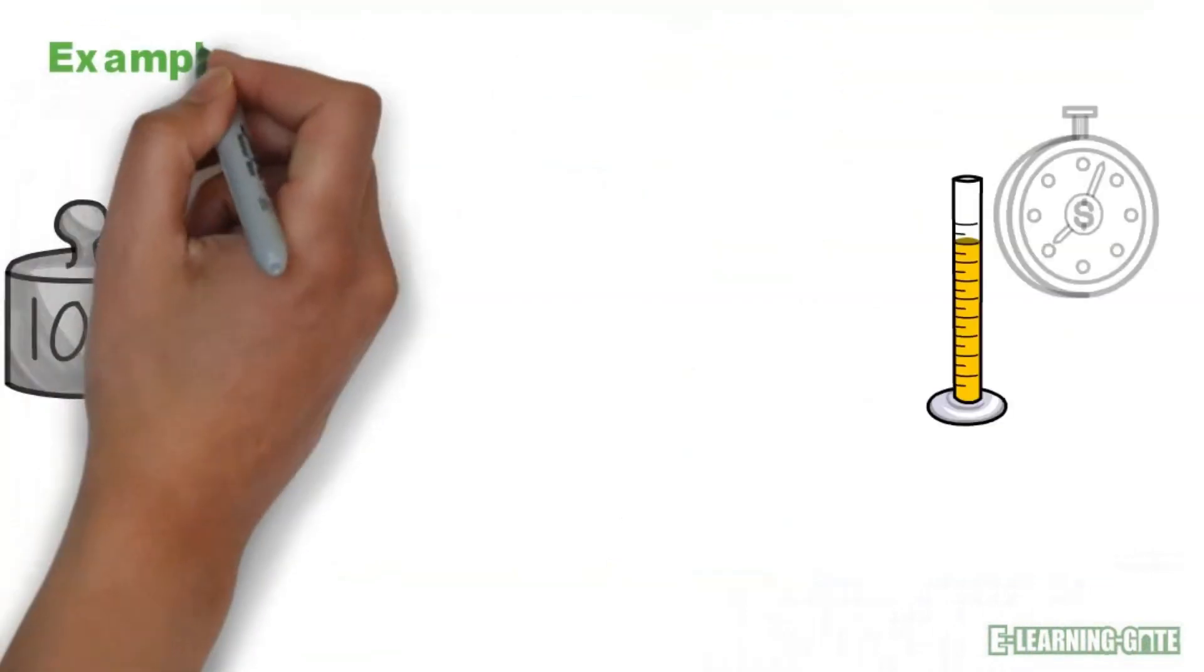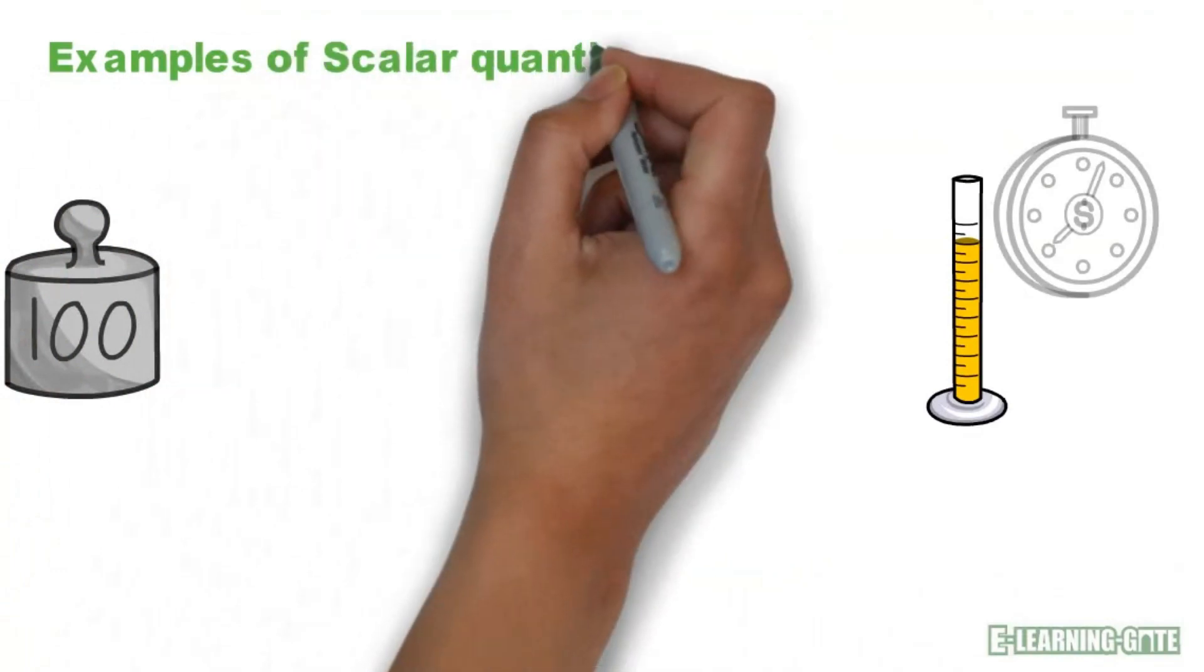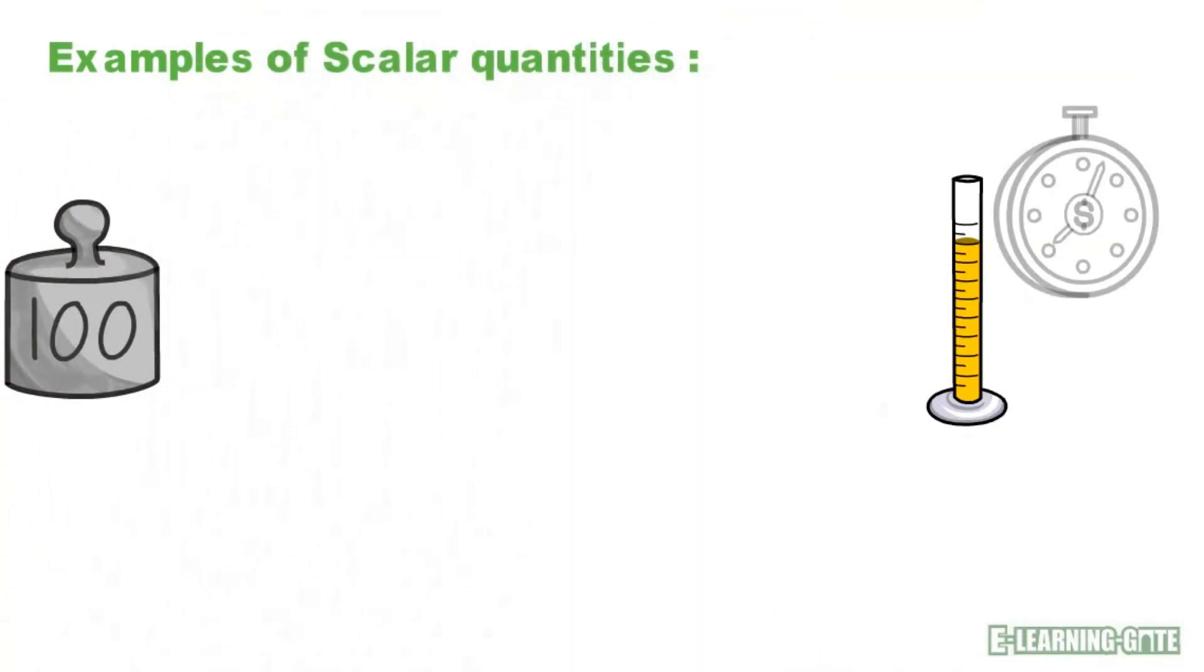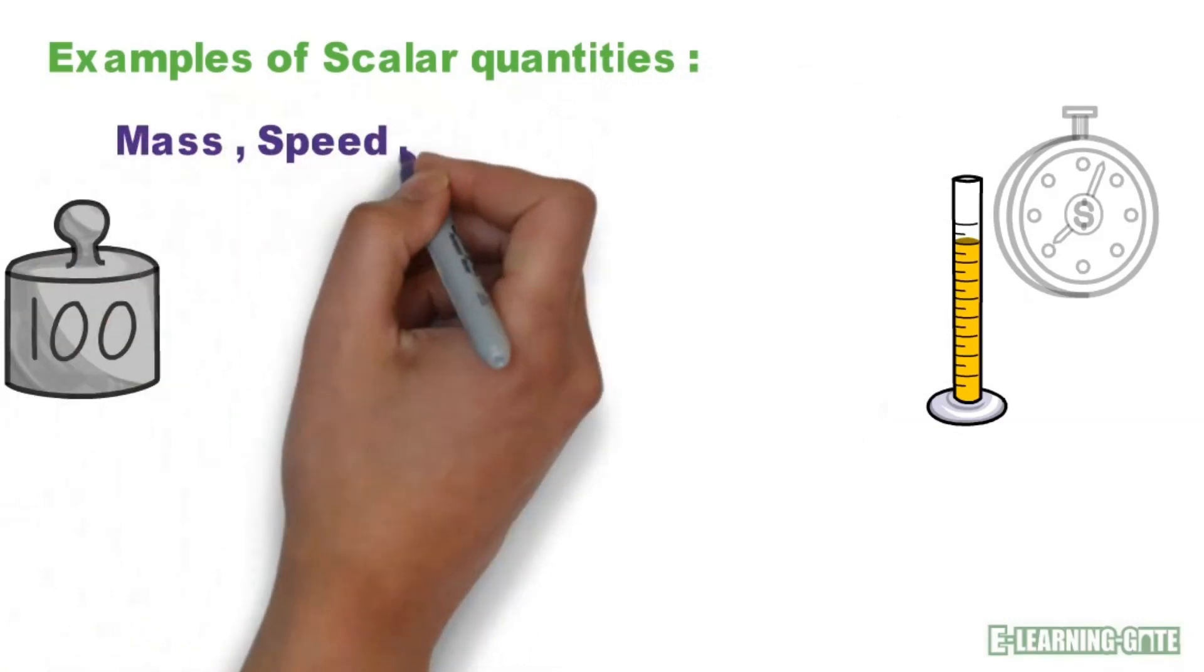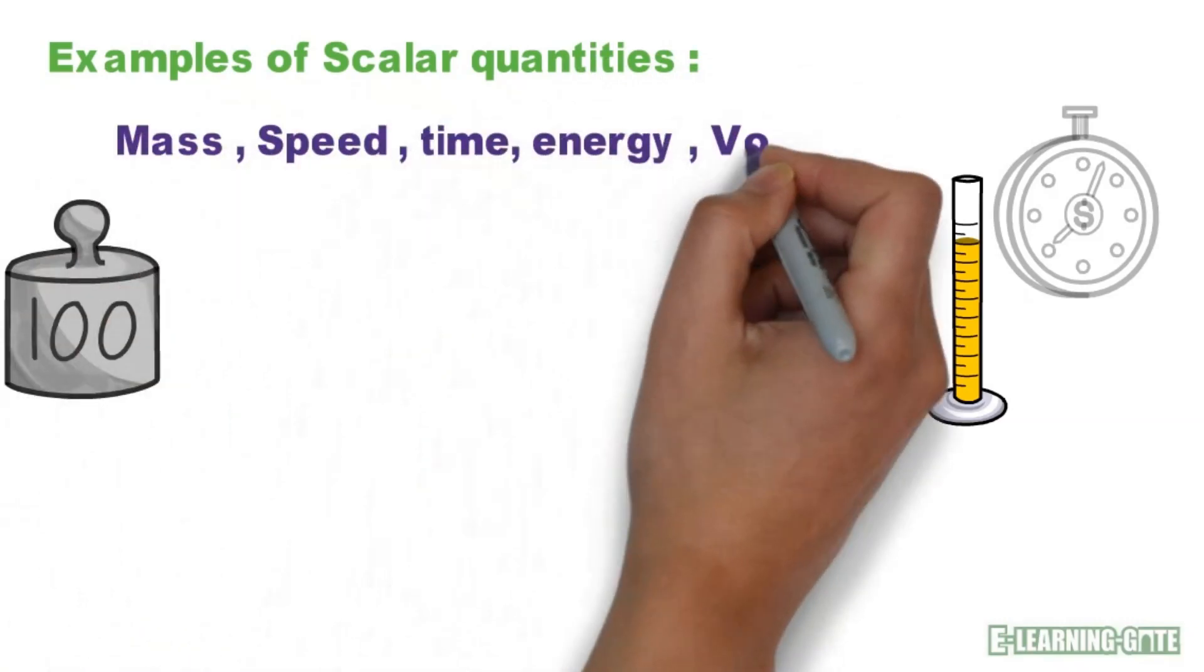Here are a few examples of scalar quantities: mass, speed, time, energy, volume, area.